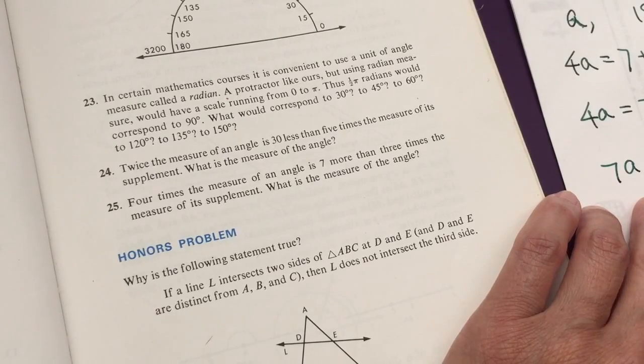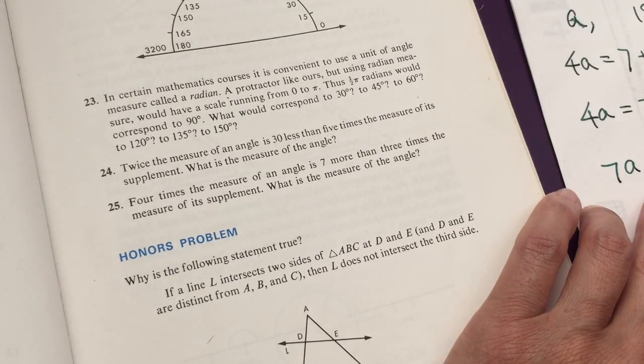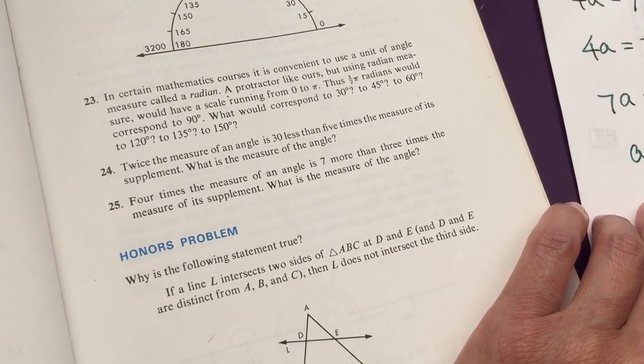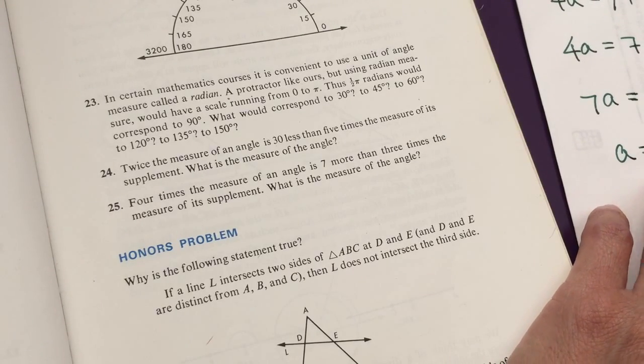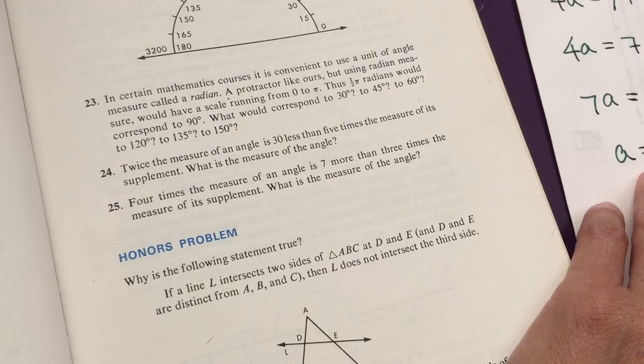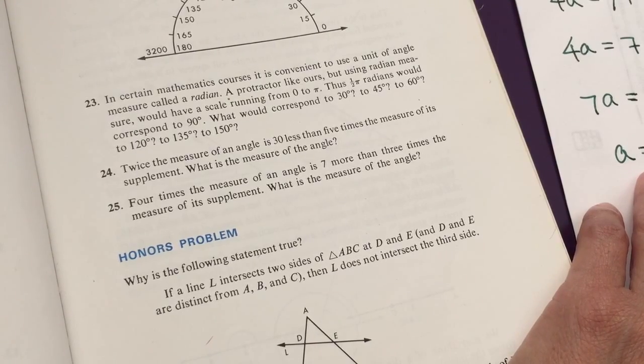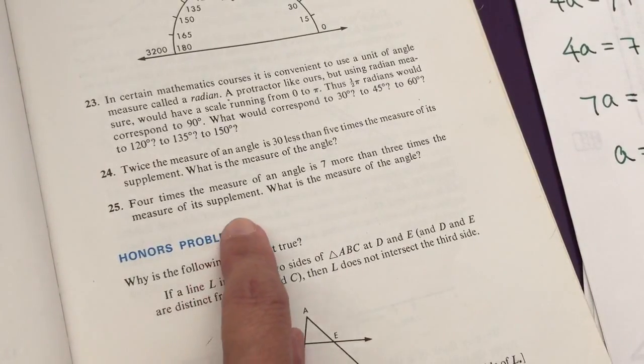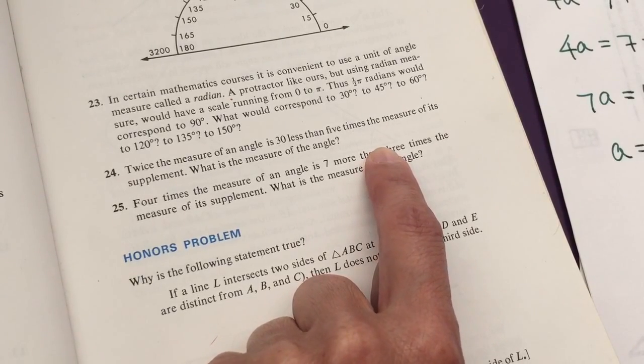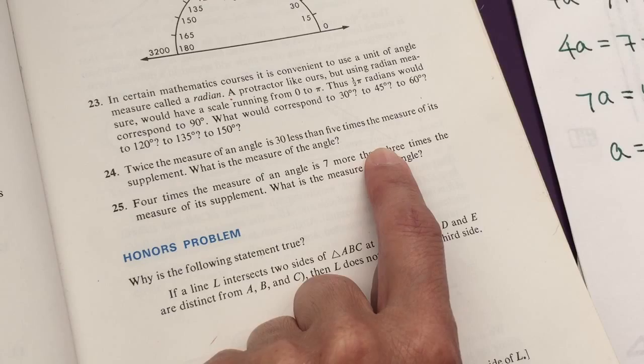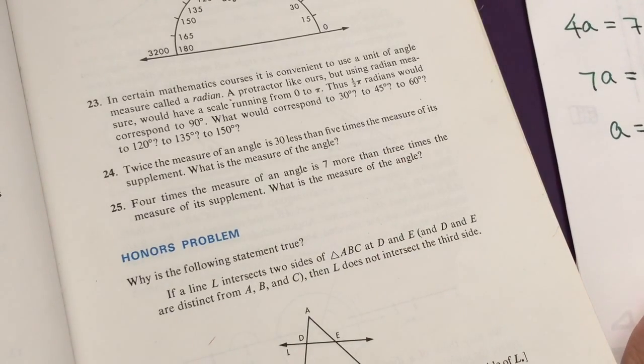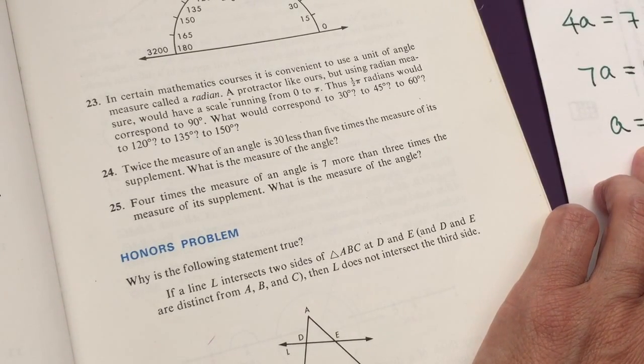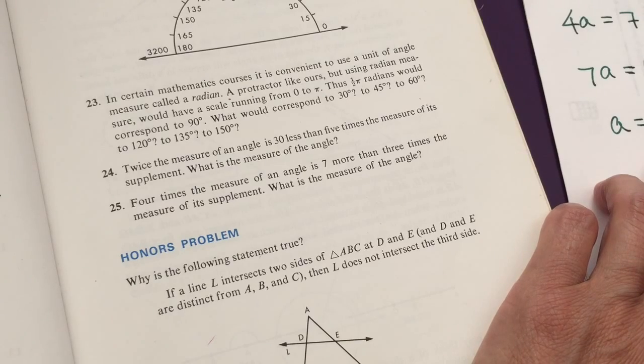So 4A equals 7 plus 540 minus 3A. So 7A equals another messy number. So 7A equals 547, so A equals 547 divided by 7. So if six more than, then this problem can be solved. Ah yeah, they make it so, yeah. So A equal to 78 and one seventh.